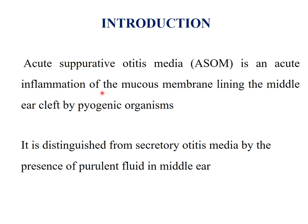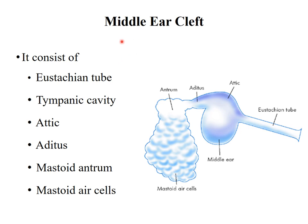Now we will look at what is the middle ear cleft. The middle ear cleft consists of the Eustachian tube, the tympanic cavity which is the middle ear cavity, attic, aditus — a small communicating passage between the attic and antrum — then the mastoid antrum and the mastoid air cells. So this whole structure is known as the middle ear cleft. Otitis media is not only the infection of the middle ear but the whole middle ear cleft.